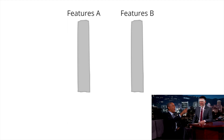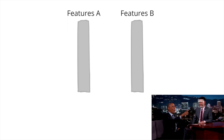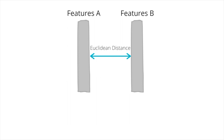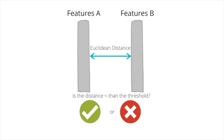In the evaluation phase, to decide who the person in a video is, the features of the detected face are extracted. Then the Euclidean distance is calculated between those features and features stored in a specific directory. If the distance is below a predefined threshold, then both features are of the same person.